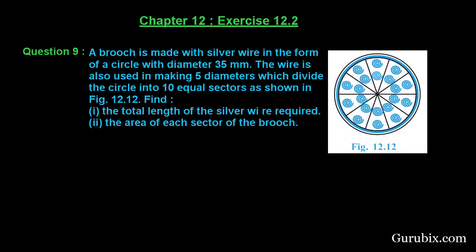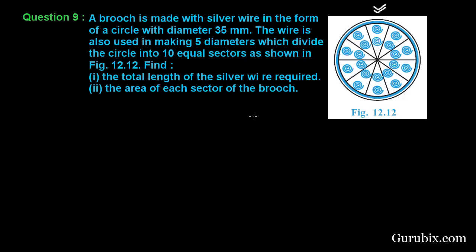...used in making five diameters which divide the circle into ten equal sectors as shown in this figure. Then find the total length of the silver wire and secondly the area of each sector of the brooch. This is a very interesting question, let us solve it.